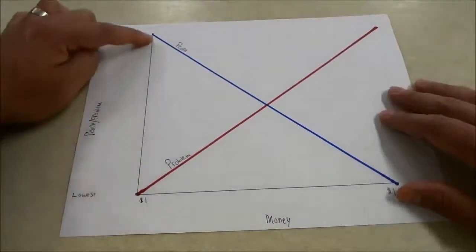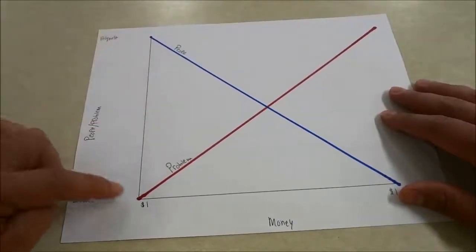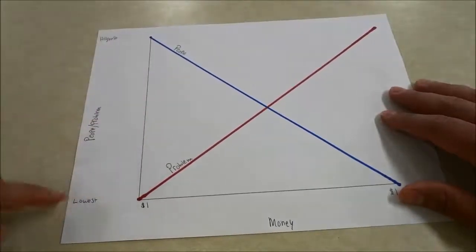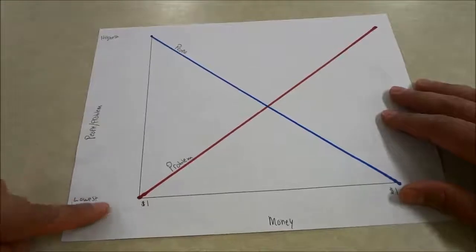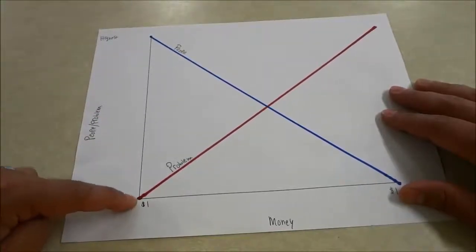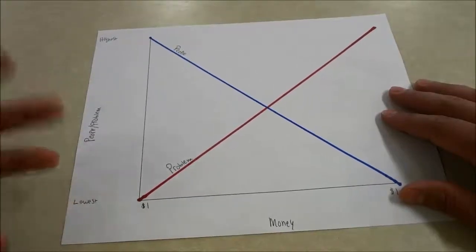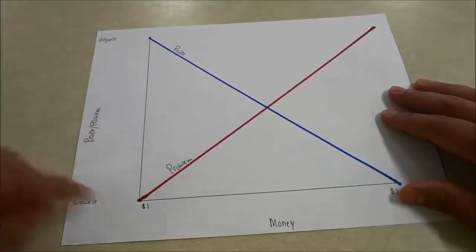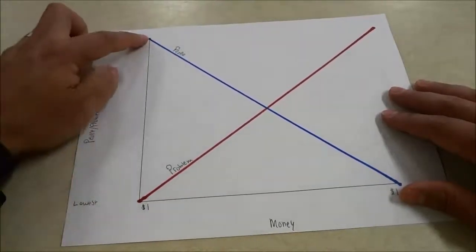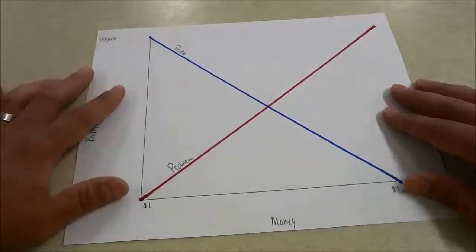This line right here represents the people and problem line. On the bottom of this line, it represents the lowest amount of people, or the easiest problem that can be solved. Up here represents the most people and the hardest problem to solve.